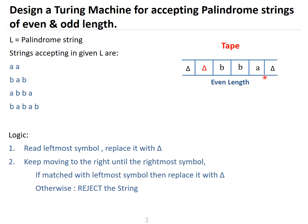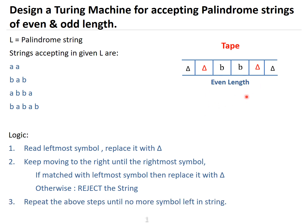In this case, the rightmost symbol is 'a', so we replace it with delta. So the leftmost symbol 'a' is replaced by delta, and we keep searching for the rightmost similar symbol on the tape and replace it. Then these steps are repeated for the remaining symbols until no more symbols are left on the tape. That is the complete logic — once you understand this, you can proceed to construct the Turing machine.